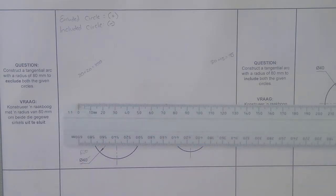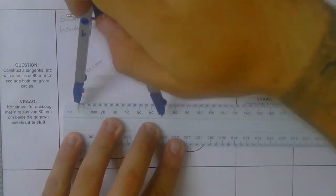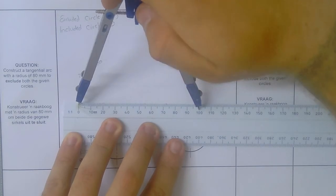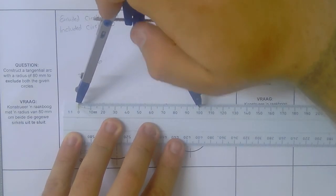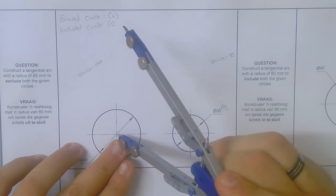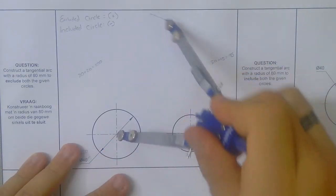So now we take our ruler and we go and measure 100 with our compass. One to one, 100. And then on the middle point of that circle, we make a little arc at the top.